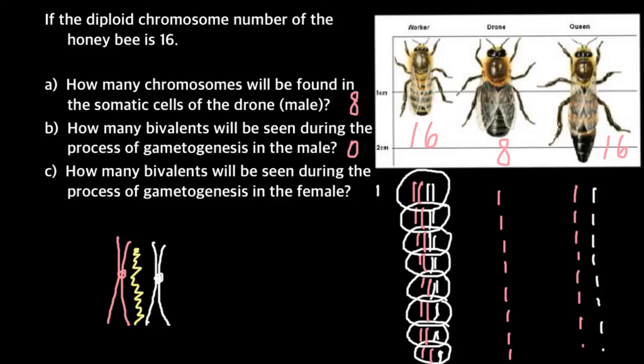And question C: how many bivalents will be seen during the process of gametogenesis in the female? We already answered this question. We have one, two, three, four, five, six, seven, and eight tetrads or bivalents. So our answer here would be eight.